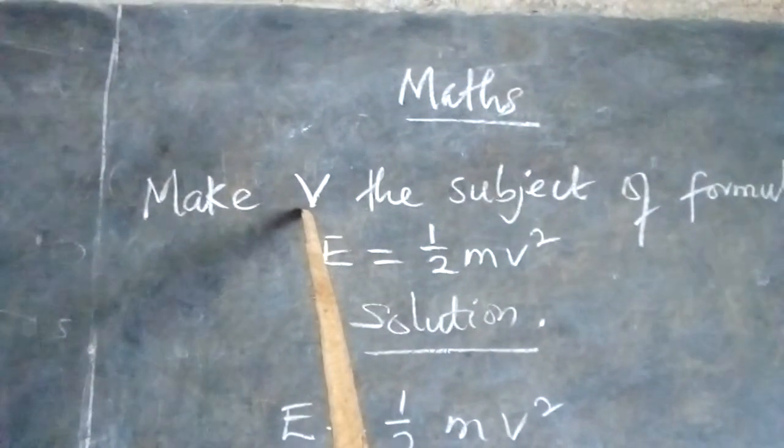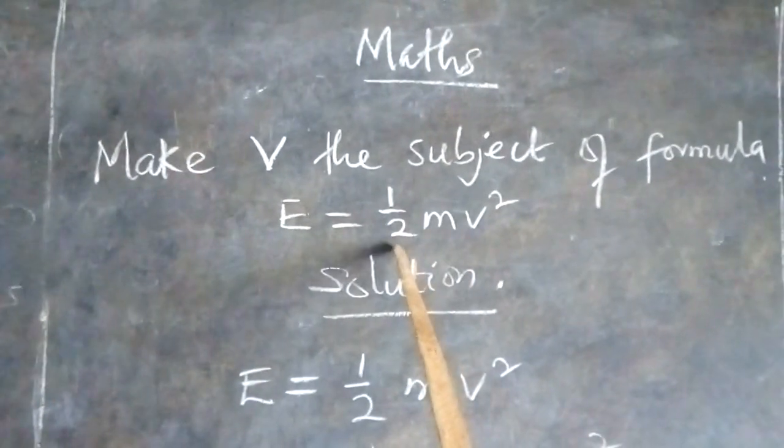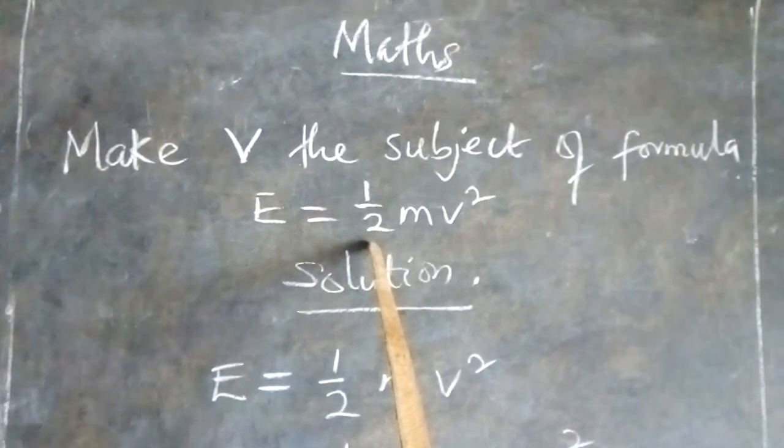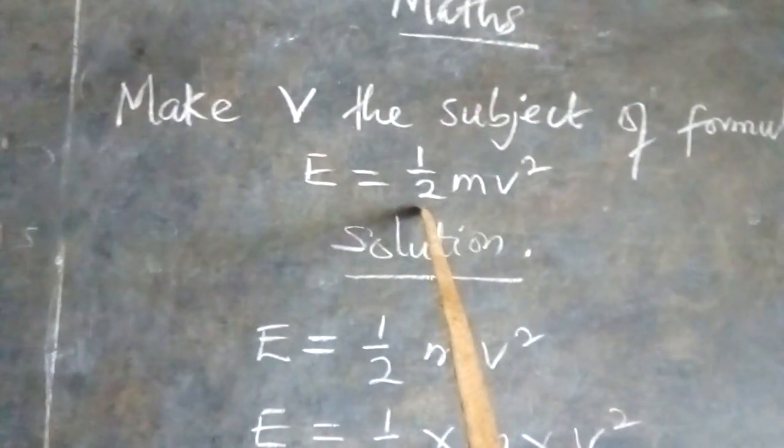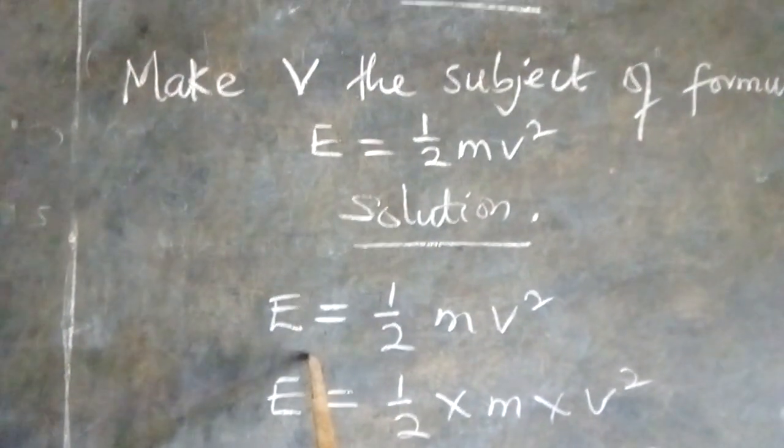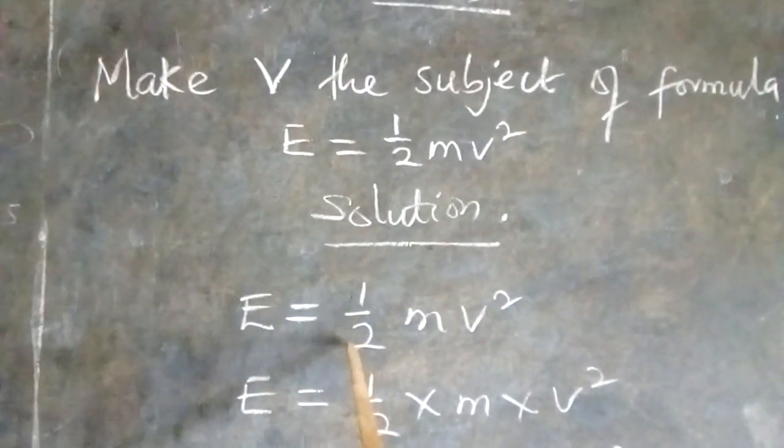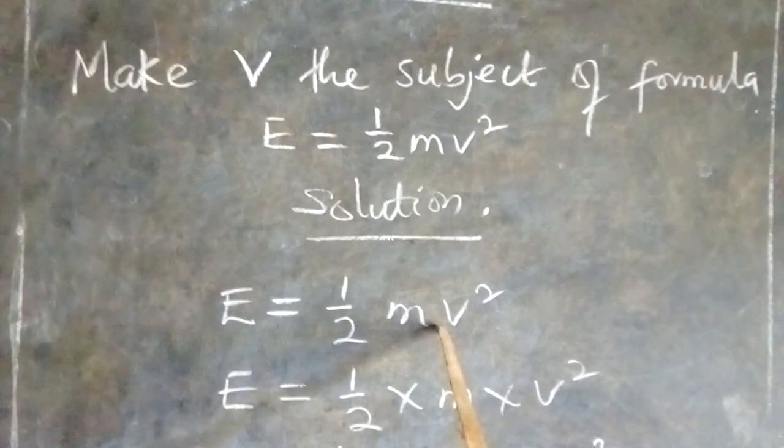We are to make V the subject of the formula in the expression we have seen on the board. Now, let's look at the solution. This is the question given. E equals 1 all over 2 mv squared.